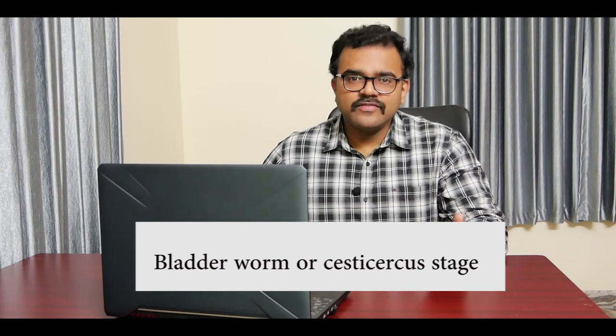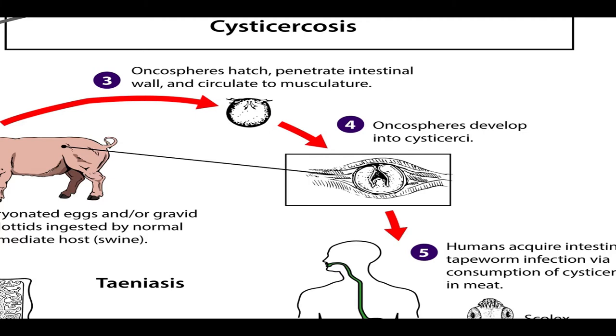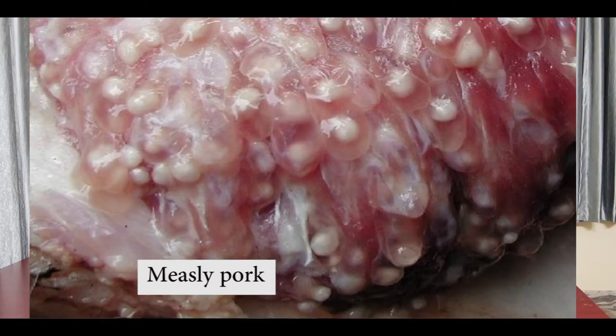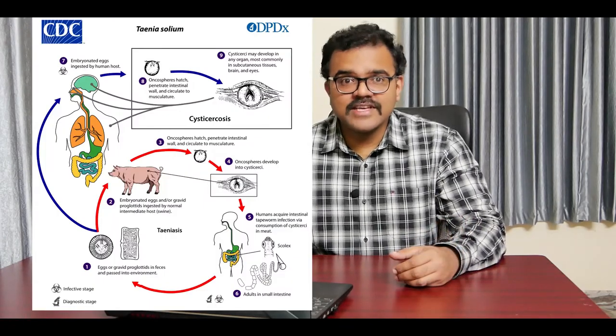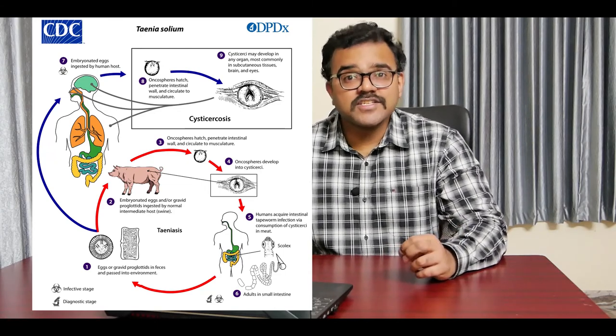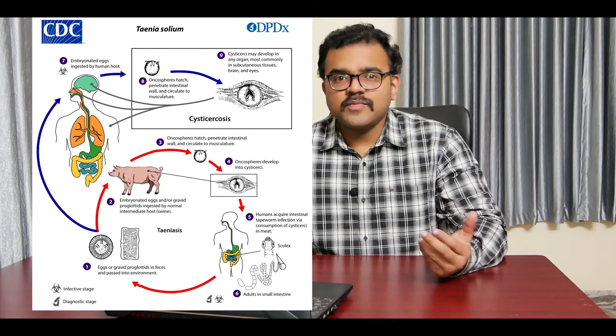The cysticercus is a saccular, fluid-filled stage with a small invaginated scolex. Pork infected with bladder worms appears spotted and is called measly pork. Further development of the parasite does not occur until it reaches the body of a definitive host again. If imperfectly cooked pork is consumed by an uninfected person, the highly resistant bladder worm enters their gut. The scolex of each bladder worm gets everted and gains attachment on the gut wall, and by the budding of new proglottids in the neck region, a new worm is finally developed. Infection with an adult worm is called taeniasis.